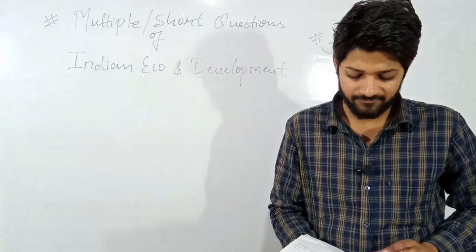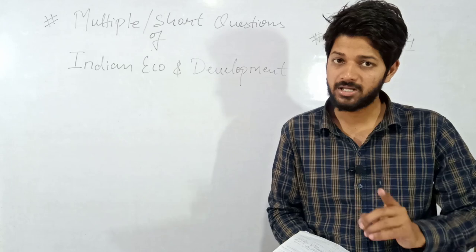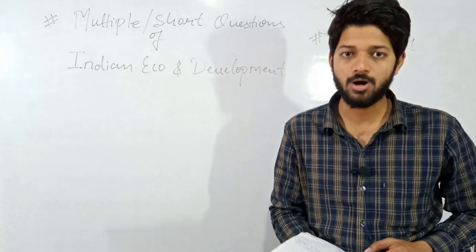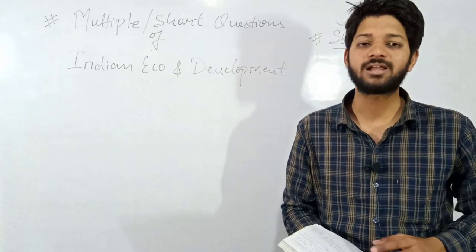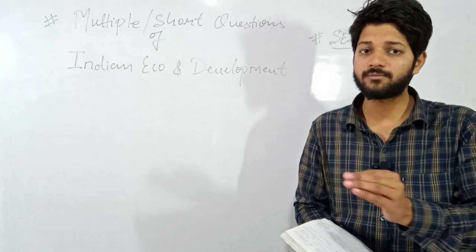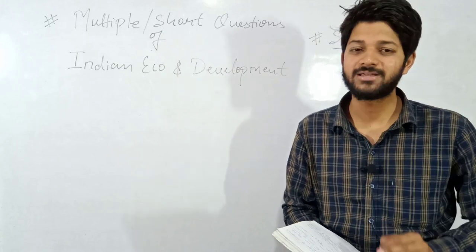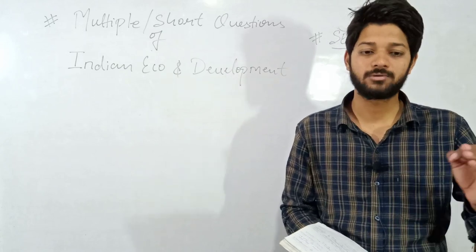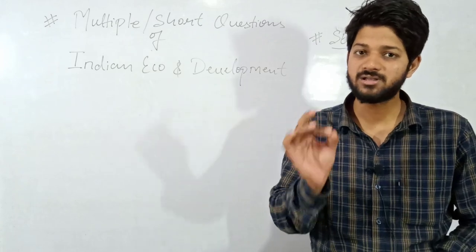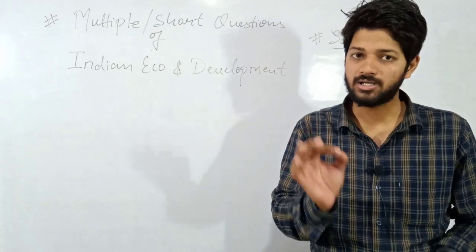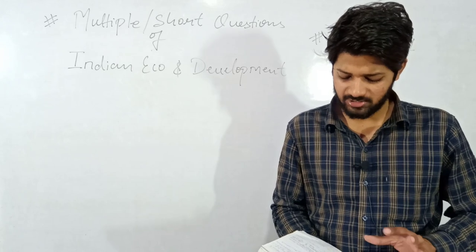The fifteenth question: what were the goals of the Five-Year Plan? Option A: growth; Option B: modernization; Option C: self-reliance; Option D: all of the above. The answer will be D — all of the above. The goals of the Five-Year Plan were growth, modernization, self-reliance, and equity.